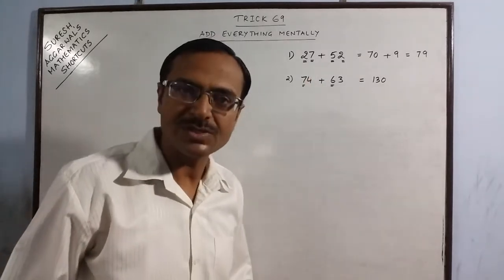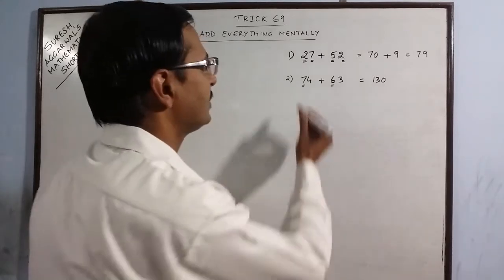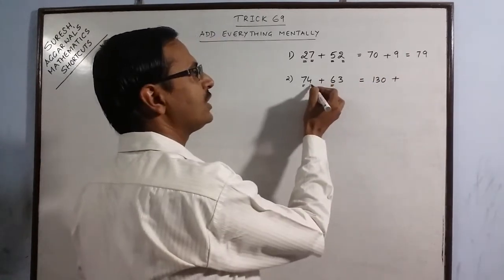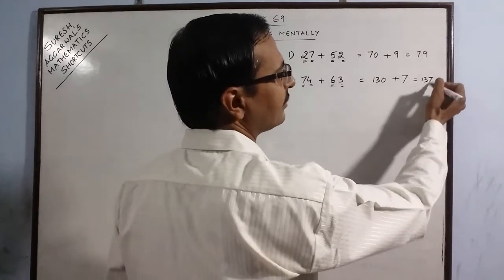I will take more examples wherein we will add the 100's places first. 7 plus 6 is 13. Put 1 0. Then take the unit's place 4 and 3 7. 130 plus 7 is 137.